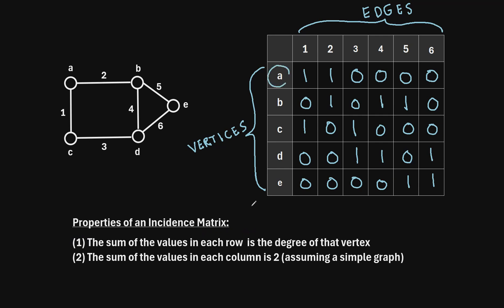The first is that the sum of the values in each row is the degree of that vertex. So for example, if we consider this first row right here, this is vertex A. If we take the sum of the values in this row, we find that the sum is 2, and that is the degree of vertex A.